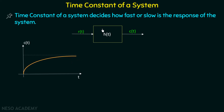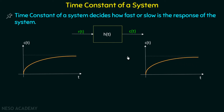On the other hand, if the time constant of this system is low and we are giving the same input, then the response of this system will be fast. So if the time constant is high, the response is slow; if the time constant is low, the response is fast and the speed of the system is high.